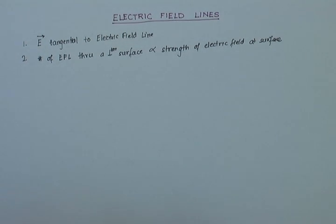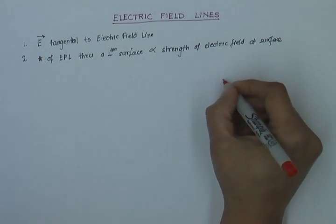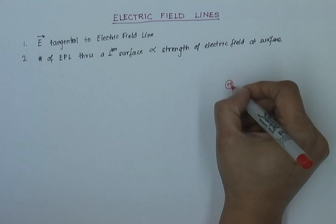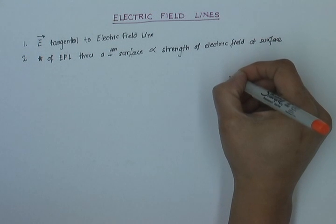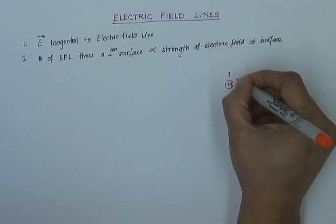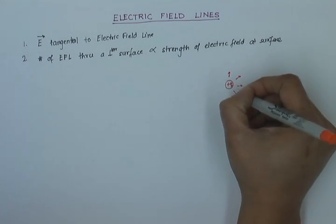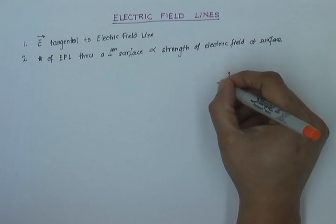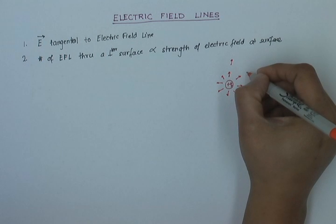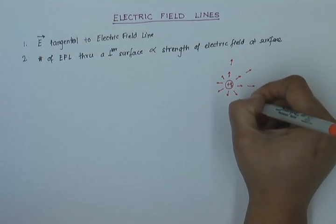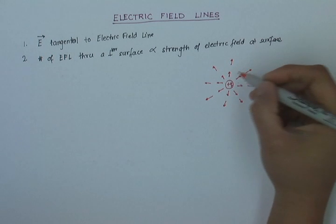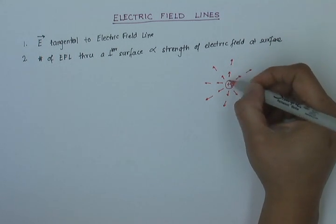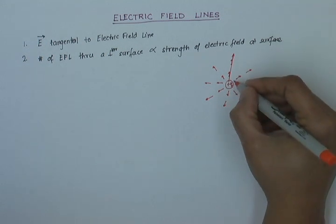Let us see what that means by drawing electric field lines for a positive charge. If I have a positive Q charge, then at each point the electric field is going to be acting away from it. As I move away, the strength of the electric field will reduce. To draw a line tangent to the direction of the electric field vector at each point, my electric field line will radiate outward like this.